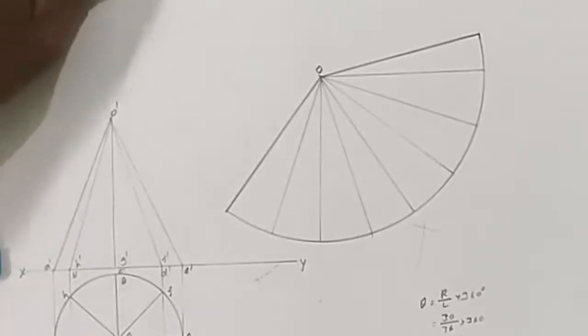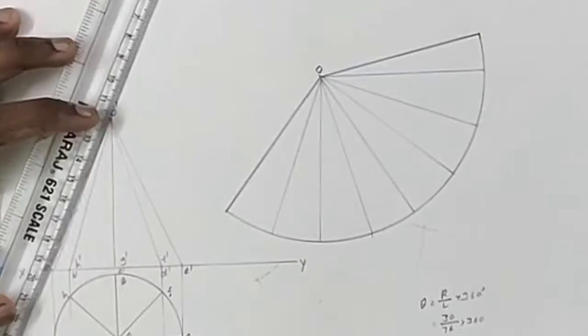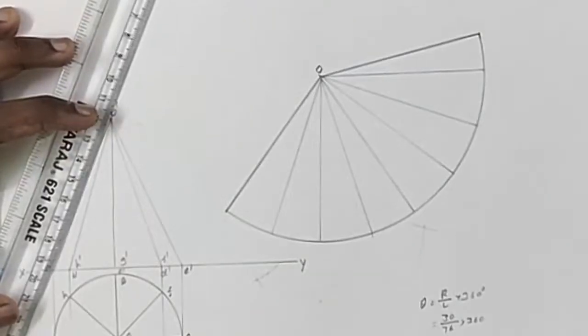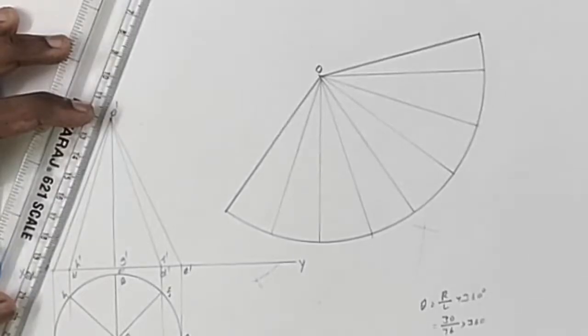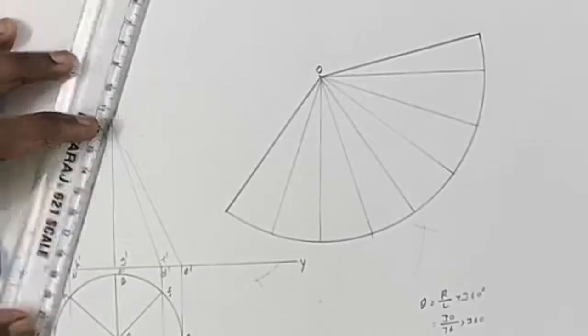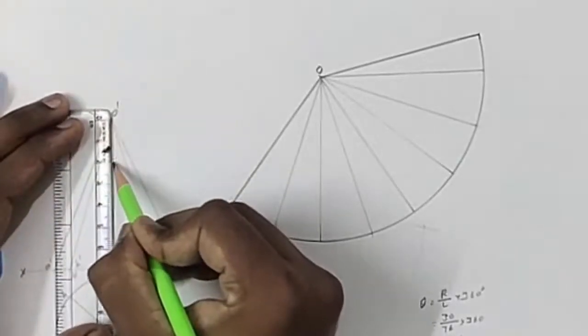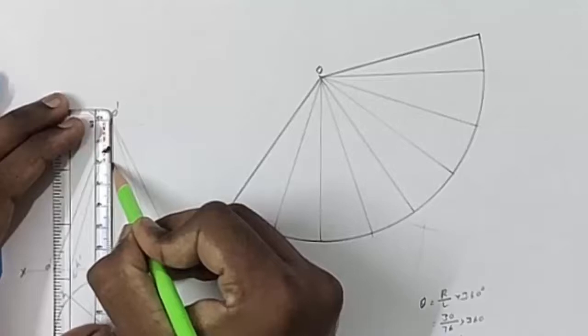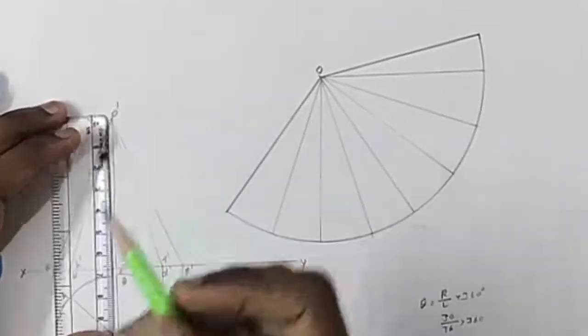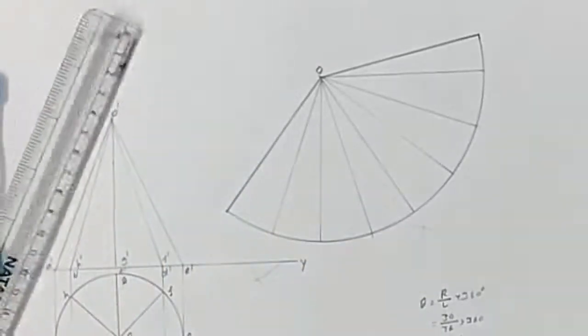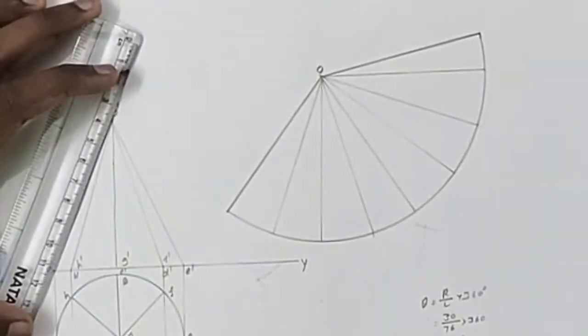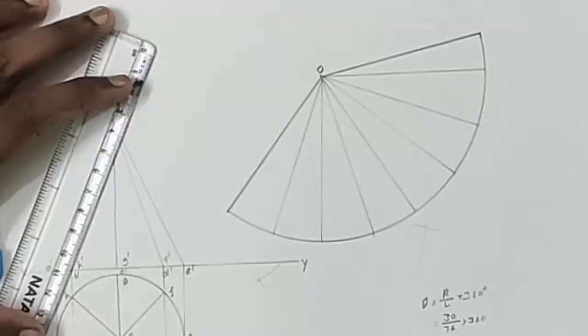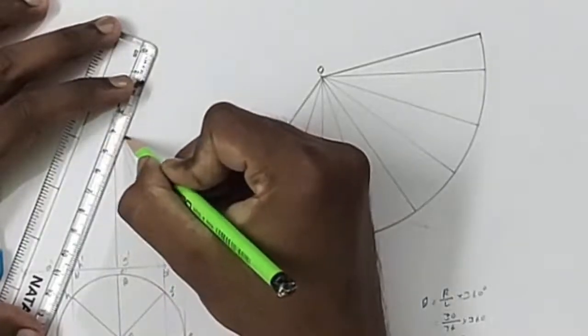So let us take the cutting plane parallel to this generator, the first generator that is OA, and it passes through the point 20mm from the apex. Let us mark a point 20mm from the apex. This is the point. Now keep your drafter scale parallel to this point. Now move that parallel to that cut point. Now locate the cutting plane.